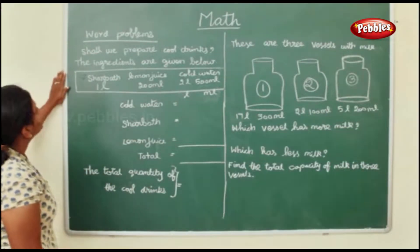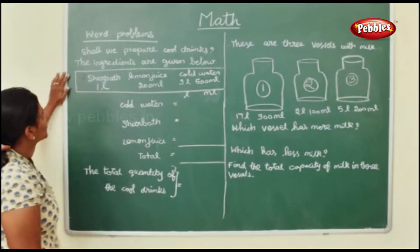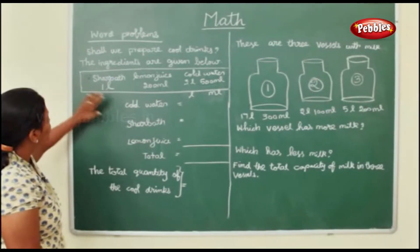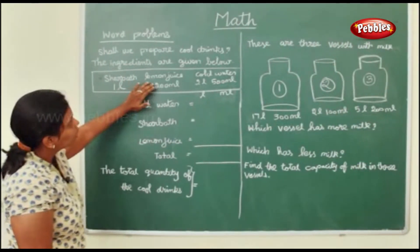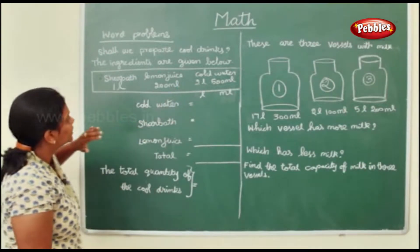We shall look at now some word problems. Shall we prepare cool drinks? The ingredients are given below. Sharbat 1 liter, lemon juice 200 ml, cold water 2 liter 500 ml.